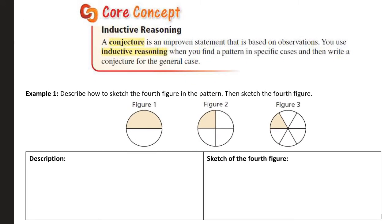And we are going to first use inductive reasoning. So a couple definitions here. A conjecture is an unproven statement that is based on observations. We use inductive reasoning when we find a pattern in specific cases and then write a conjecture for the general case.